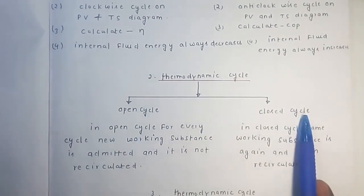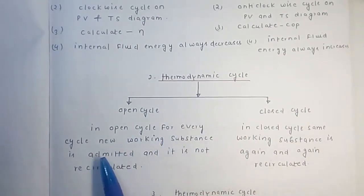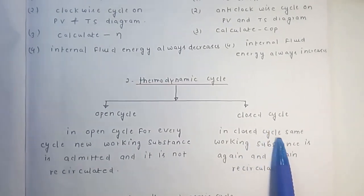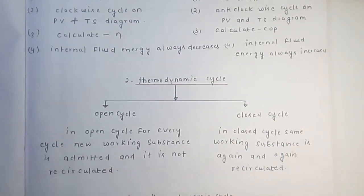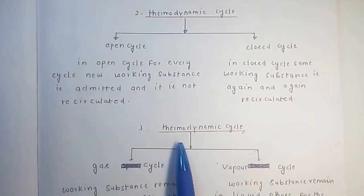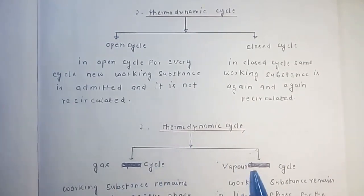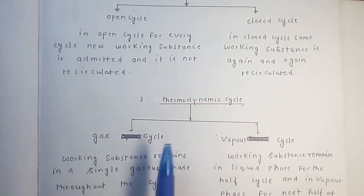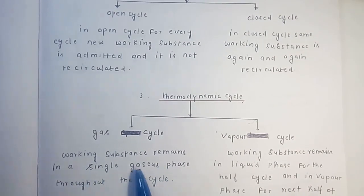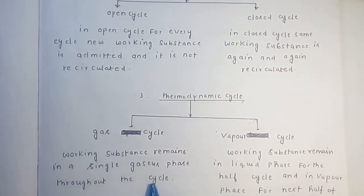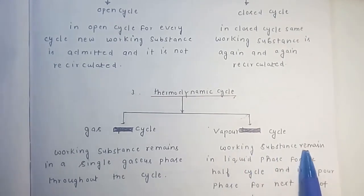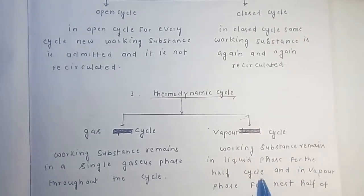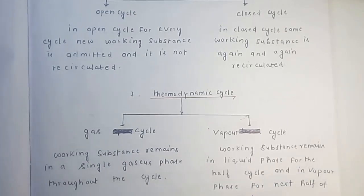The second classification of thermodynamic cycles is open cycle and closed cycle. In an open cycle, for every cycle a new working substance is admitted and it is not recirculated. In a closed cycle, the same working substance is recirculated again and again. The third classification is gas cycle and vapor cycle. The gas cycle is the Brayton cycle and the vapor cycle is the Rankine cycle. In a gas cycle, the working substance remains in a single gaseous phase throughout the cycle, whereas in a vapor cycle it remains in liquid phase for half the cycle and in vapor phase for the next half.